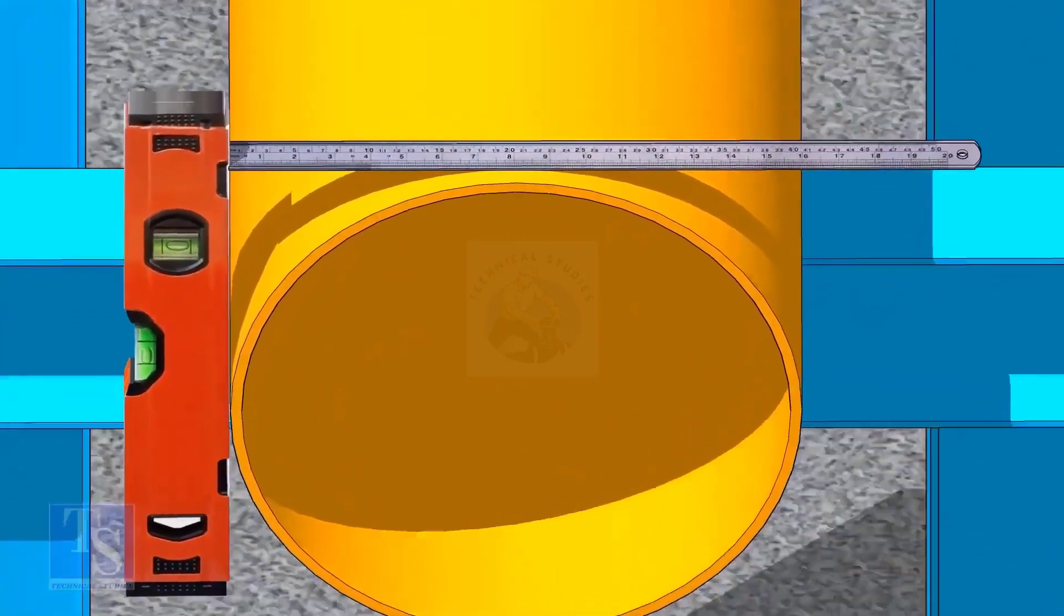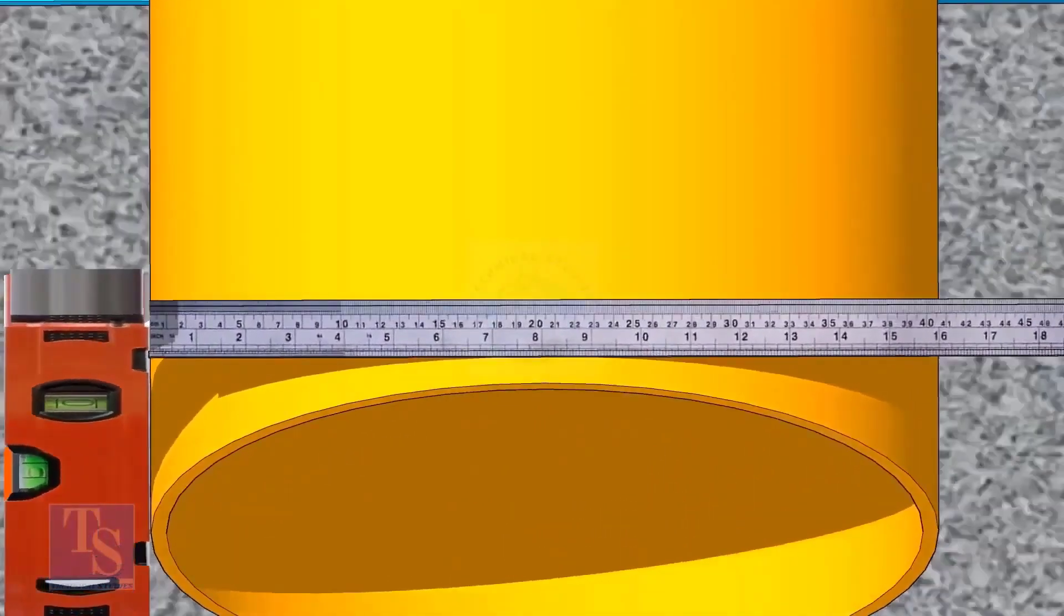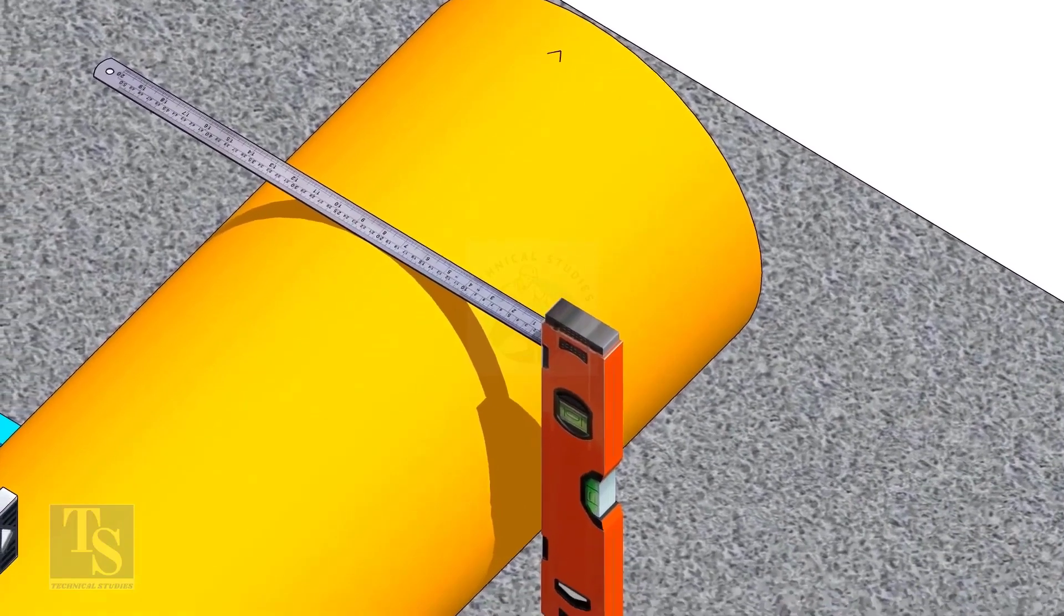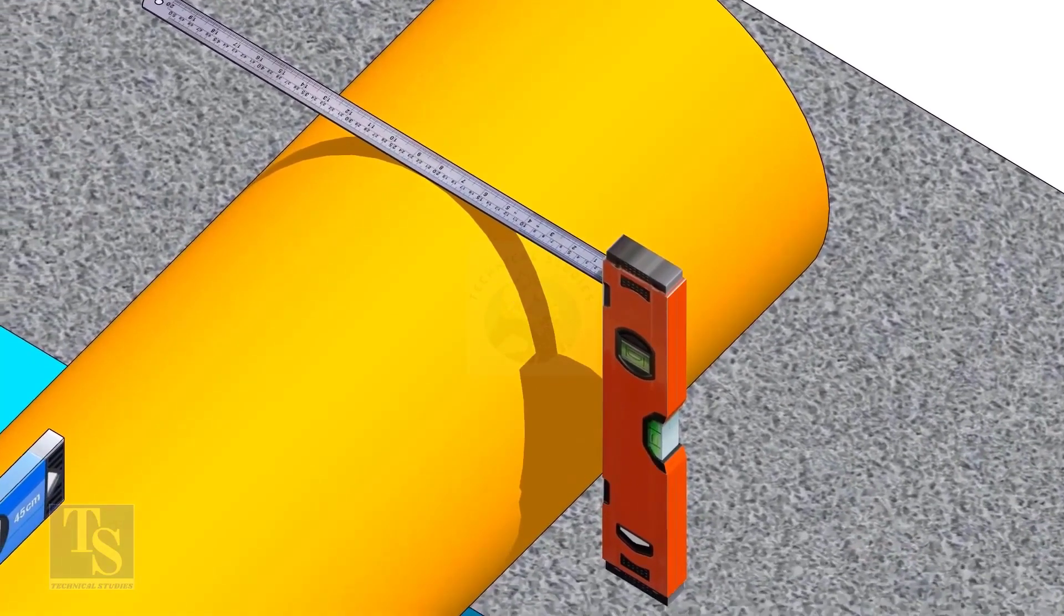Mark half OD at 300mm apart. This pipe OD is 406mm, so mark 203mm from the vertical level bottle on the top of the pipe. And draw a line connecting these marks.